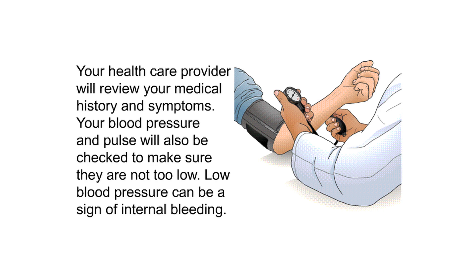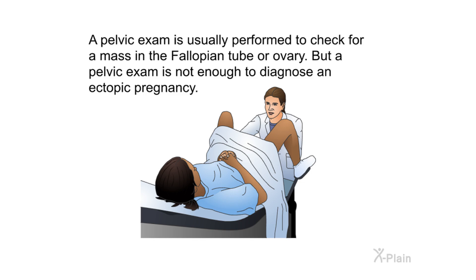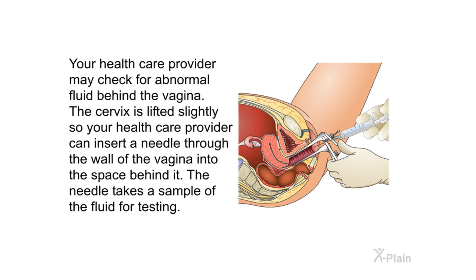Your health care provider will review your medical history and symptoms. Blood pressure and pulse will be checked to make sure they are not too low, as low blood pressure can be a sign of internal bleeding. A pelvic exam is usually performed to check for a mass in the fallopian tube or ovary, but a pelvic exam alone is not enough to diagnose an ectopic pregnancy. Your provider may also check for abnormal fluid behind the vagina by inserting a needle through the wall of the vagina to take a fluid sample for testing.